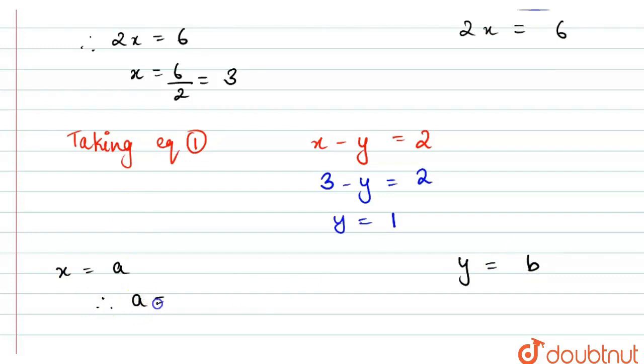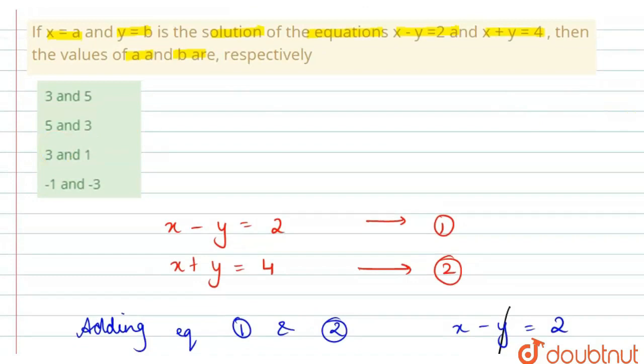Therefore, a equals 3 and b equals 1. We got the answer. The correct option is 3 and 1.